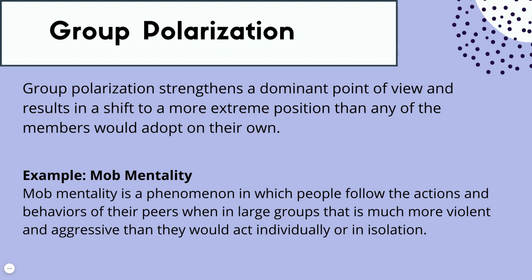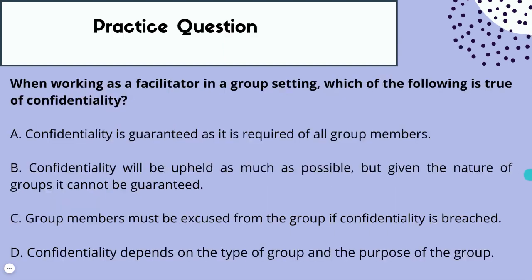Let's end with a practice question. When working as a facilitator in a group setting, which of the following is true of confidentiality? A: Confidentiality is guaranteed as it is required of all group members. B: Confidentiality will be upheld as much as possible, but given the nature of groups, it cannot be guaranteed. C: Group members must be excused from the group if confidentiality is breached. D: Confidentiality depends on the type of group and purpose of the group.